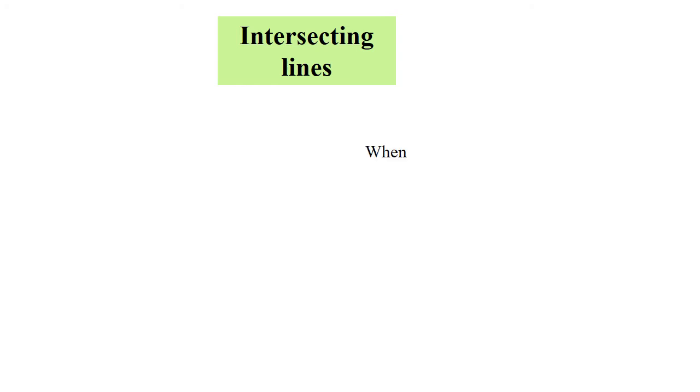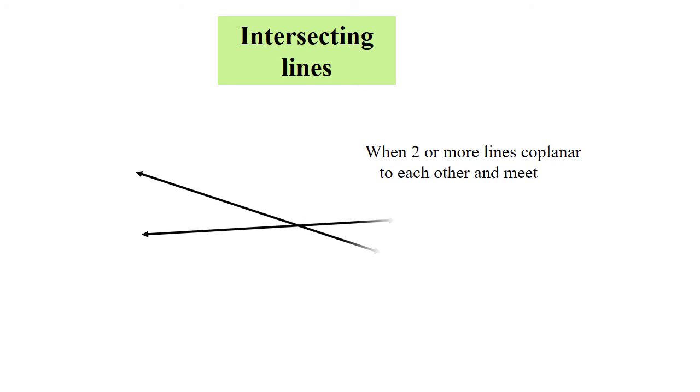Let's talk about intersecting lines. When two or more co-planar lines meet at a common point, those lines are called intersecting lines. Line M and line N are intersecting at point O. Therefore, point O is called the point of intersection.